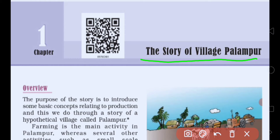Firstly, we will discuss what Economics is, because in the last classes we studied Geography — the geographical features of the earth. In Civics, we study the political system of the country. In History, we study about the past: kings, their kingdoms, their empires, etc. And in Economics, we will study about the different production processes.